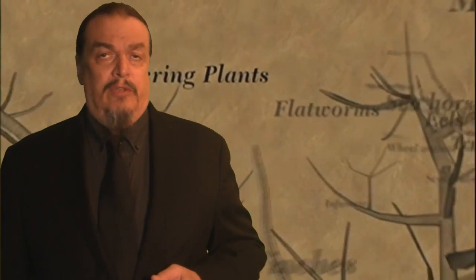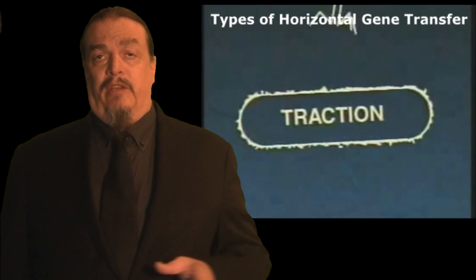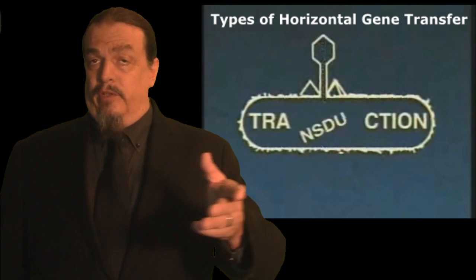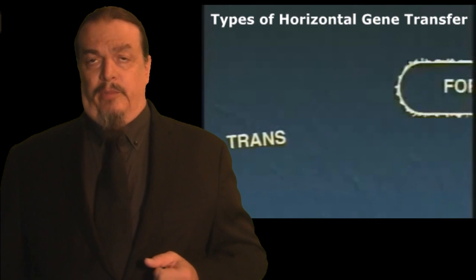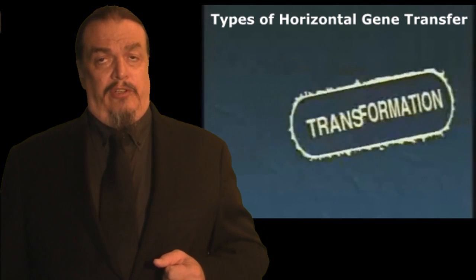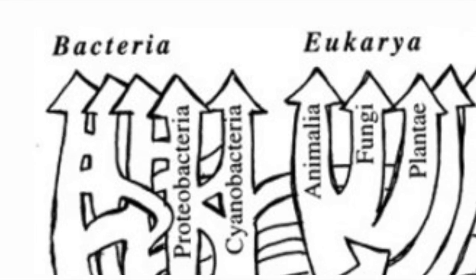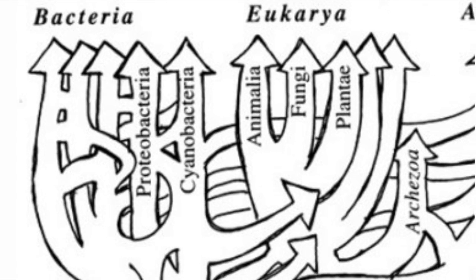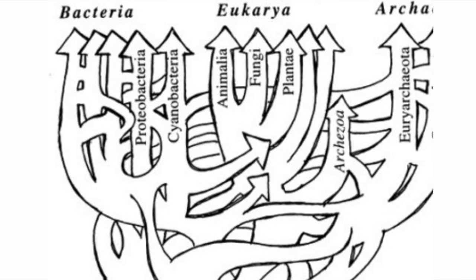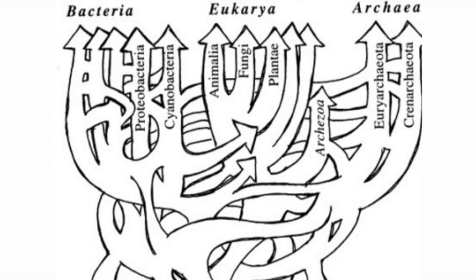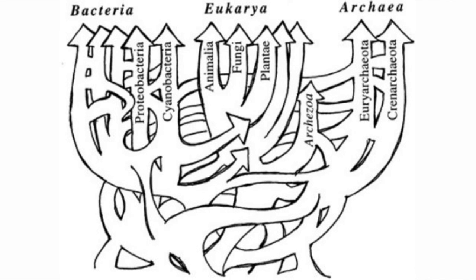Evolutionary biology often refers to a tree of life representing different branches or ancestral lineages which can be genetically traced. But the tree analogy really only works with eukaryotes. Prokaryotes, like bacteria and other single-celled microbes as well as viruses, can sometimes exchange genetic material with other microbes on contact in a process called horizontal gene transfer. Because we're not talking about an ancestor-descendant relationship, it's not really evolution — it's a separate aspect and an added complication. The result is that the tree of life for single-celled microbes has branches growing back into each other in confusing ways.